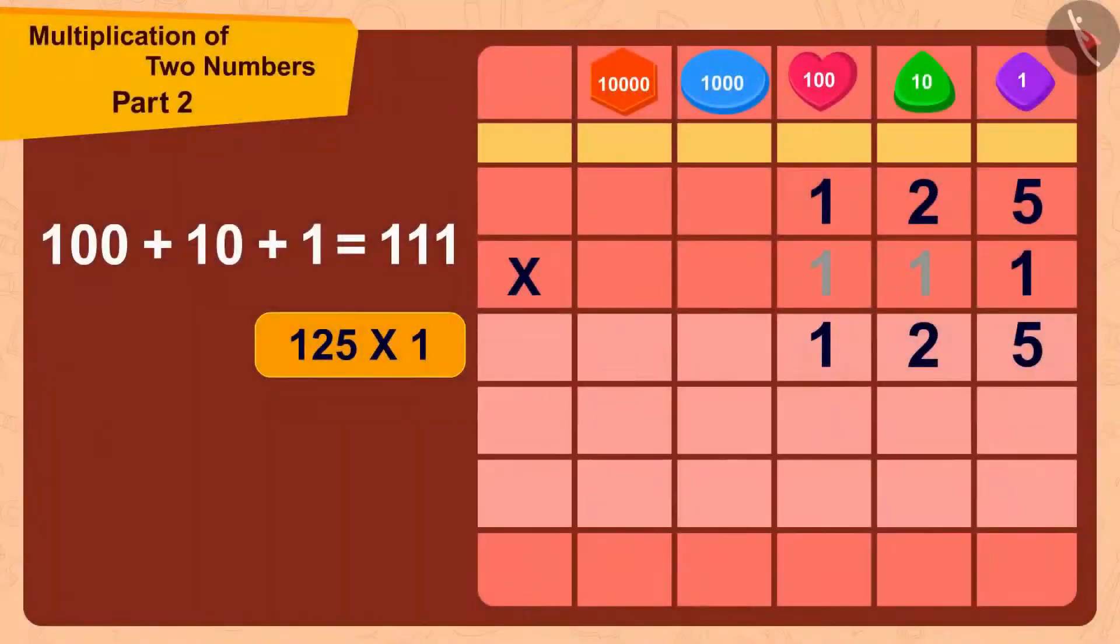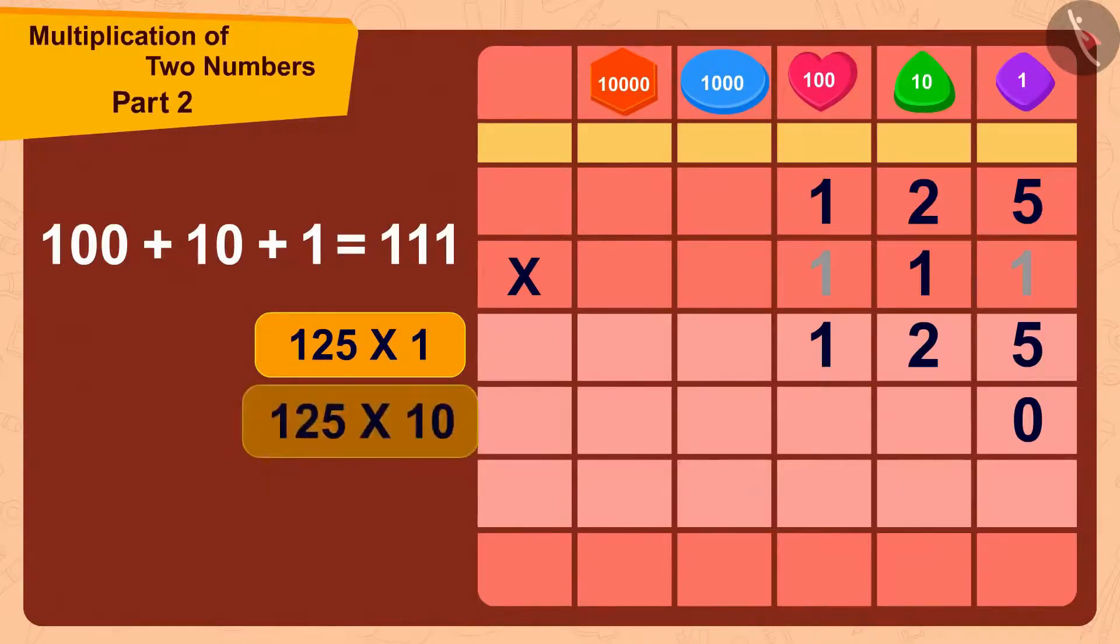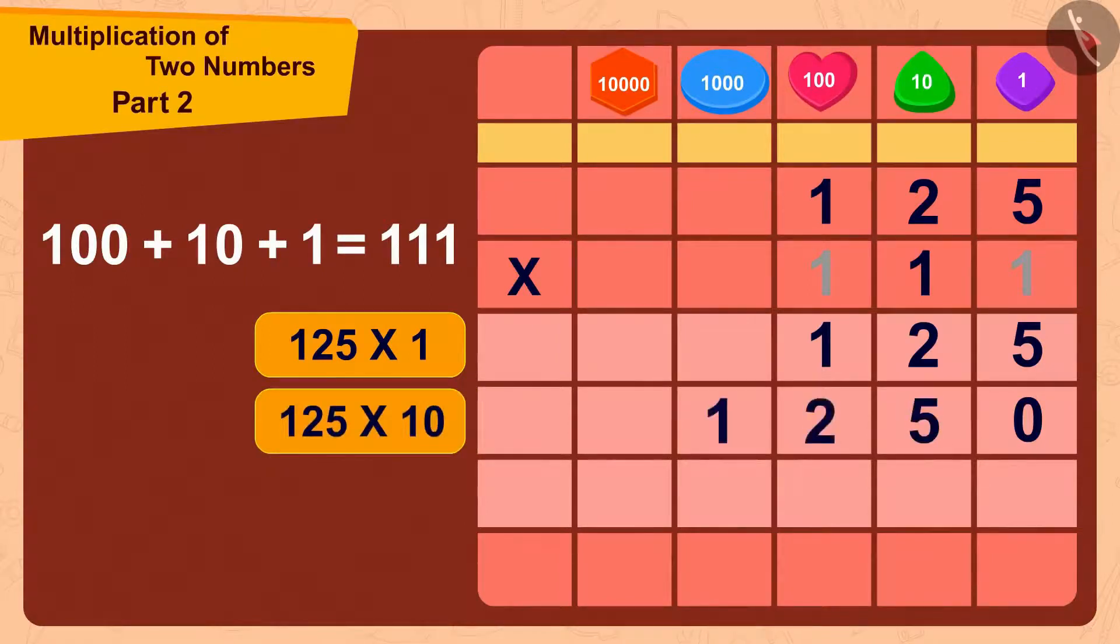Now we will multiply 125 with 10. We will do it easily in this way. First, we will write 0 here. Then we just have to multiply 125 with 1. In this way, 125 multiplied by 10 would be 1250.